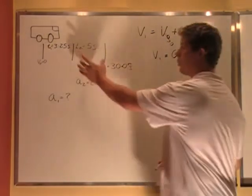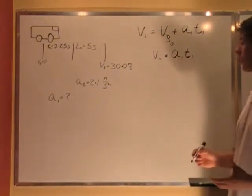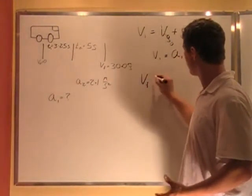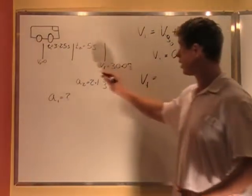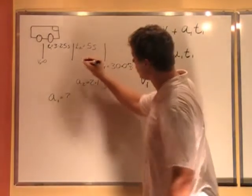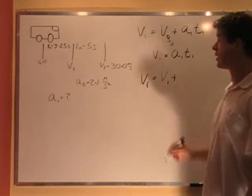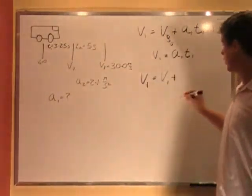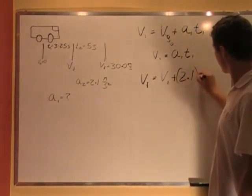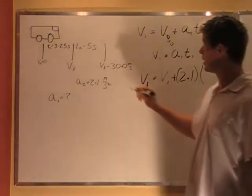And let's work with the second part of this problem, the part where we have enough information to do something. So we can say that the final velocity here is equal to our initial velocity, and we're breaking this up into sections. So now I'm calling this our initial velocity right here. So this is V1. So I can call that my initial velocity, plus the acceleration that I undergo in this time, which I know to be 2.1. So I'm actually going to put that in, 2.1 multiplied by T, which is 5 seconds.